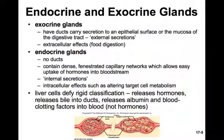Exocrine glands, which we examined earlier in the semester, have ducts that carry secretions to an epithelial surface outside the body or the mucosa of the digestive tract — essentially external secretions, hence the name exocrine. Endocrine glands, by contrast, have no ducts and secrete things to the inside. They contain dense, fenestrated capillary networks which allow easy uptake of hormones into the bloodstream. These are internal secretions, as opposed to outside the body or into the gut tube, which is essentially an external surface.